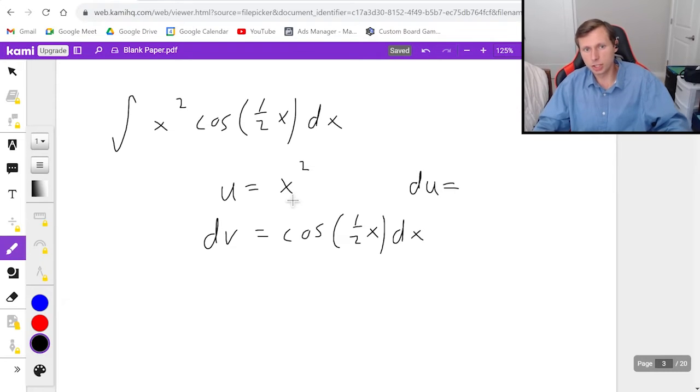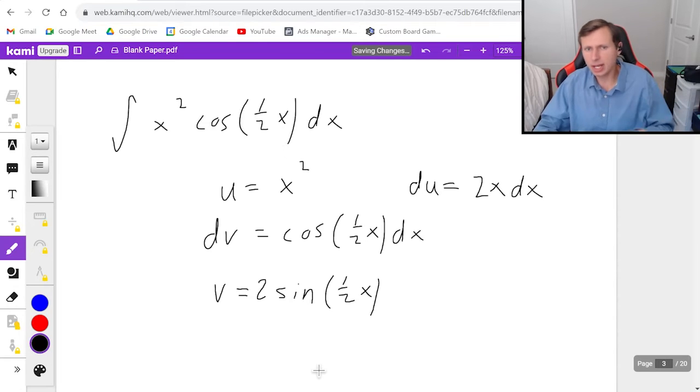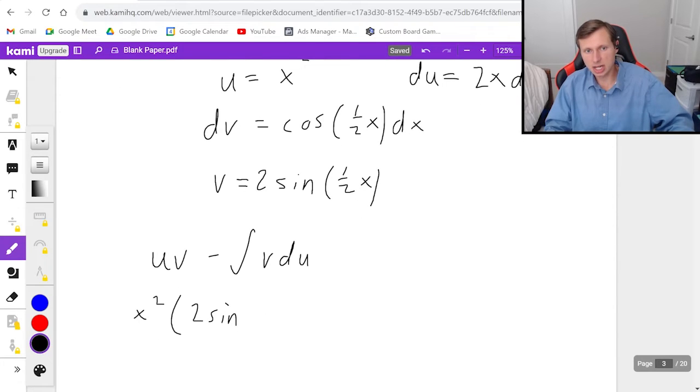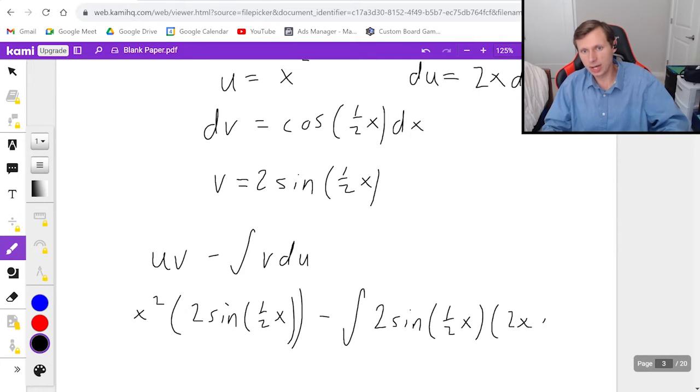Then I have to choose my du, which is the derivative of x squared. That's 2x dx. And then for the other one, it's the integral of this. So the integral of cosine is positive sine. And the 1 half is going to cause there to be a 2 in the numerator out in front. Again, I'm doing u substitution. I know the rules. I've memorized them. I can do them very quickly. As a matter of fact, I won the calculus integration tournament back in 2014, and obviously I will brag about that whenever I can. So now we're going to plug in the formula, uv minus the integral of vdu. It's going to be x squared times 2 sine of 1 half x minus the integral of vdu, 2 sine of 1 half x times 2x dx.